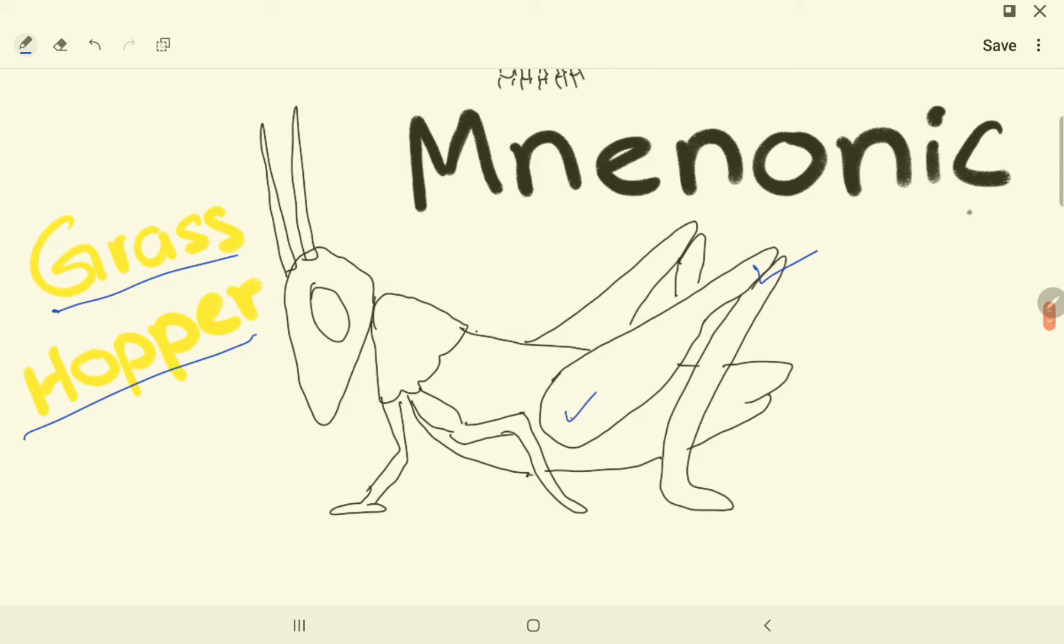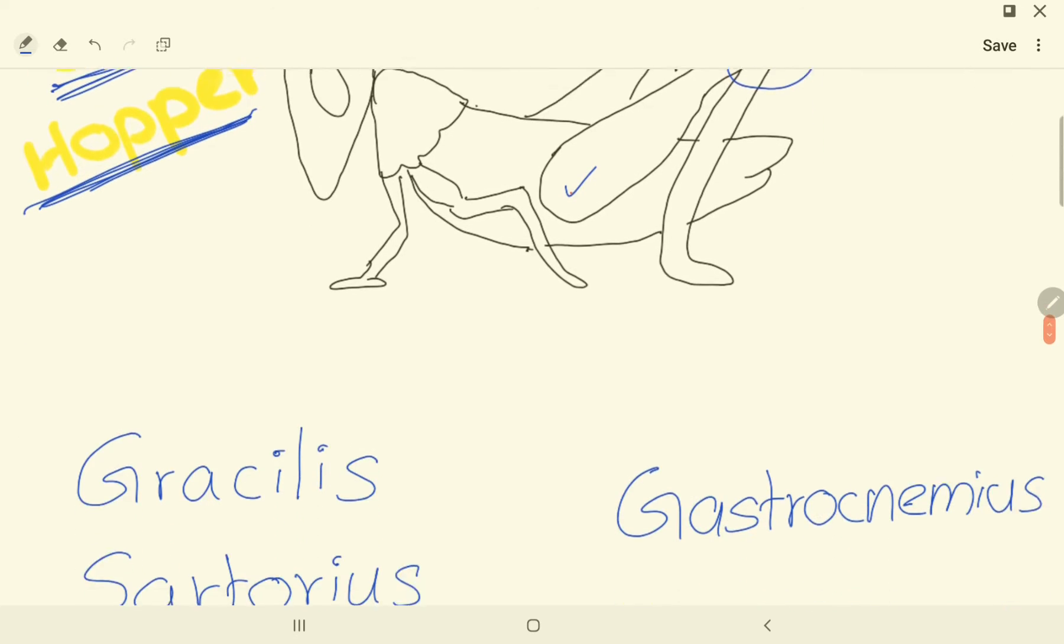See that this joint is flexed. Most of the joints are flexed, so remember the grasshopper when you're talking about the flexion of the knee joint.